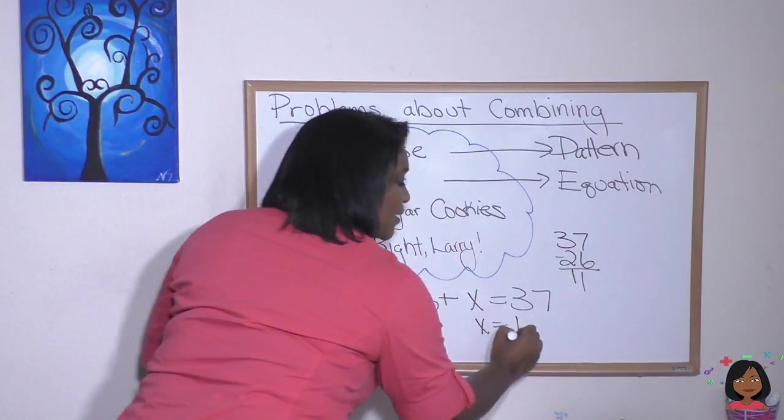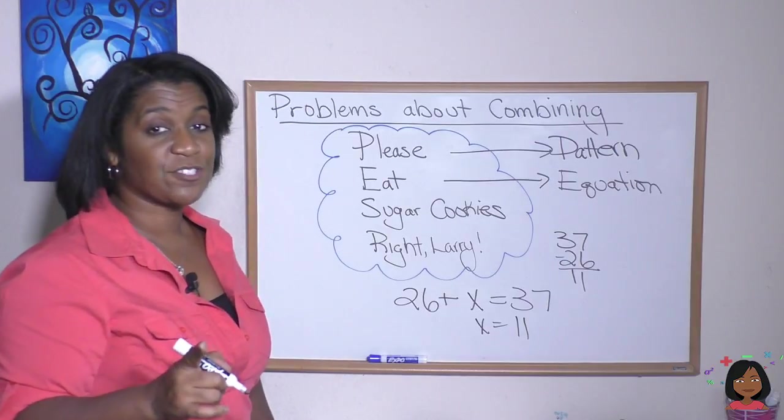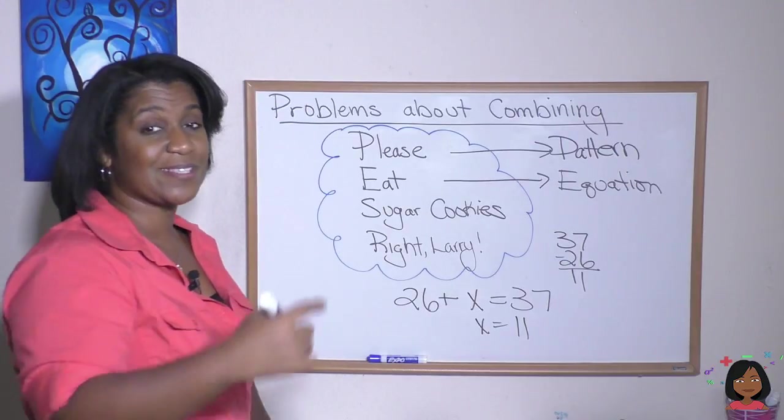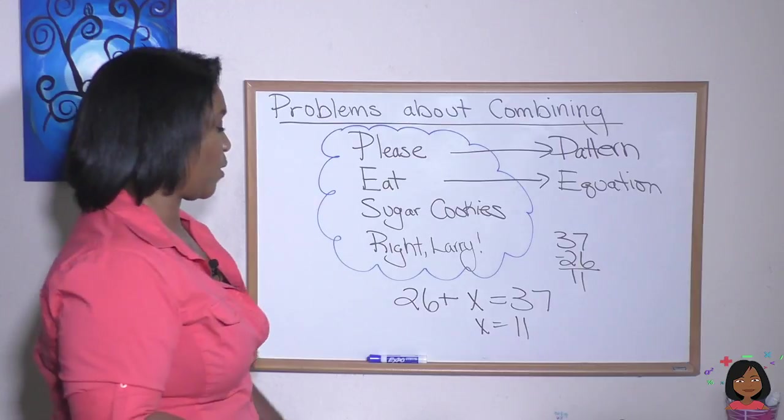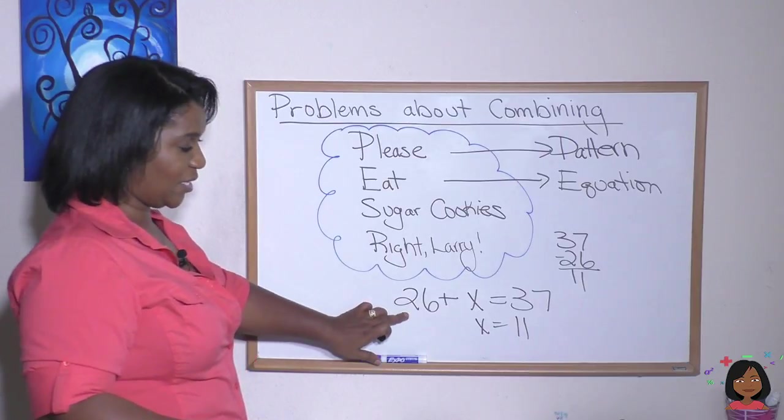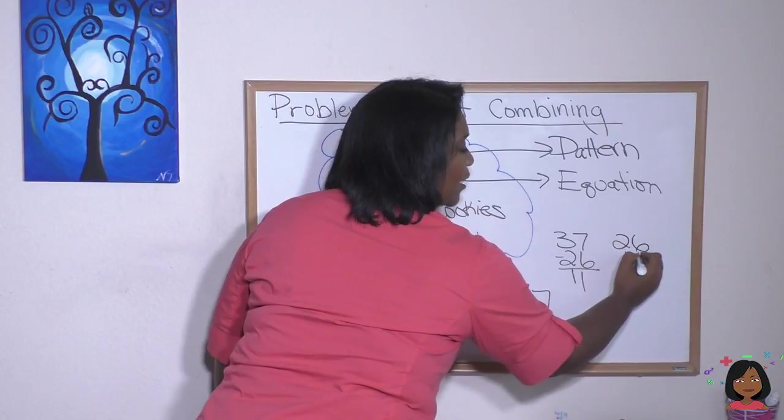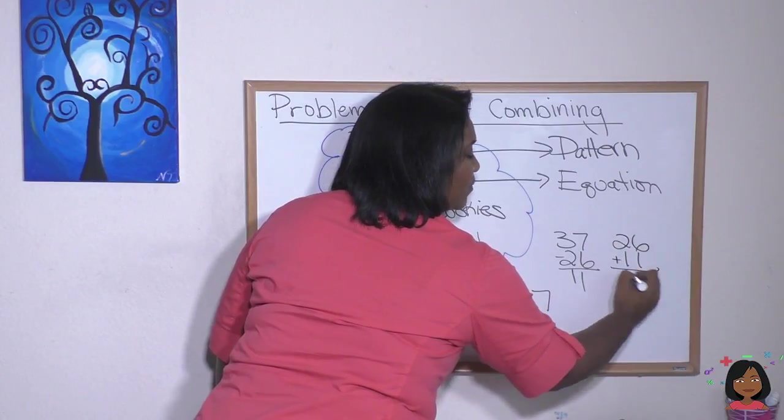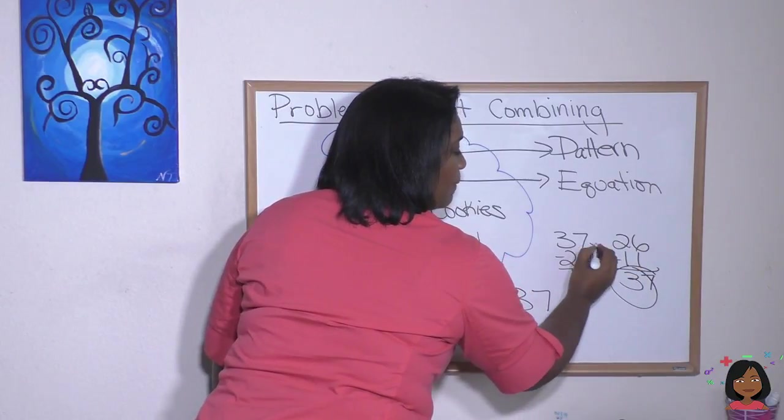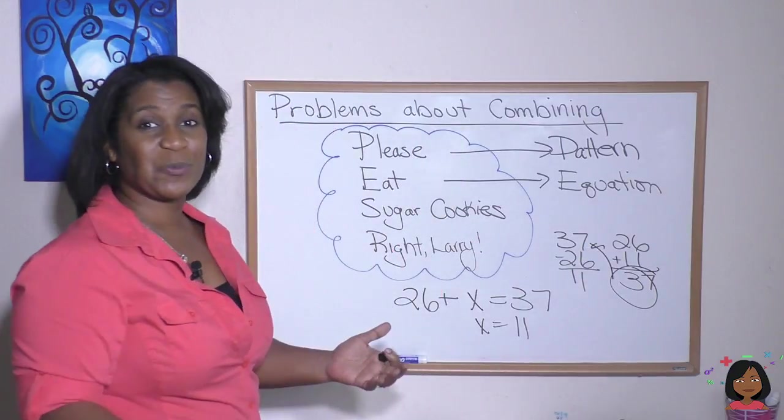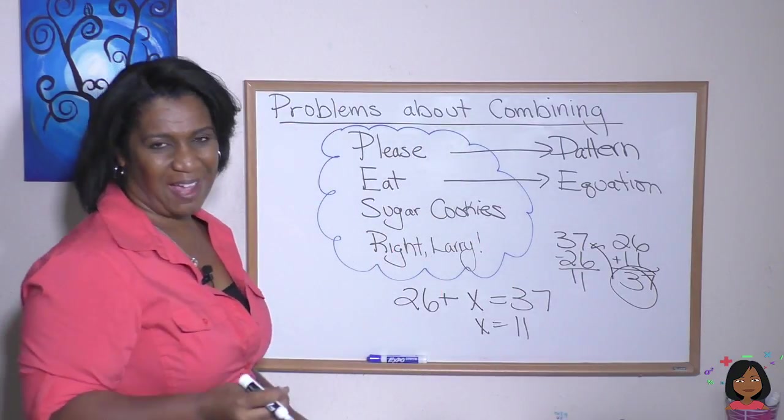So X is 11, but we're going to check our answer first by putting 11 back into our equation to see if it works, which means we're going to do 26 plus 11. Let's do it on the side here. 26 plus 11 is 37. And boom, they equal. So we're good with the check. Sugar cookies, solve and check.